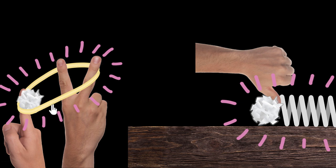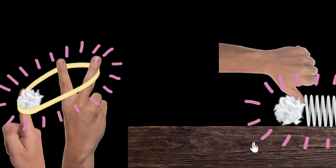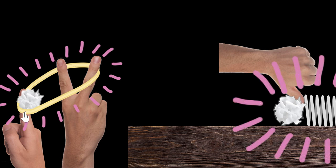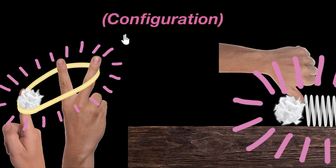Now the question is, what does this energy depend on? How can I increase the energy inside this spring? Well, if I compress it more, it'll have more energy — because it can now shoot the ball with much higher force, doing more work. So compressing the spring more has increased its energy. Similarly, stretching the rubber band more gives it more energy. So the energy depends on how much you compress or stretch the object — in general, it depends on the configuration of the object.